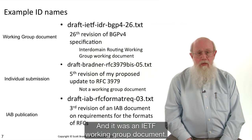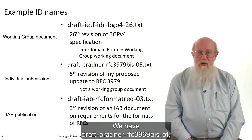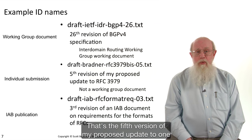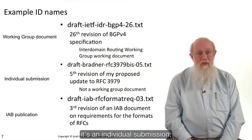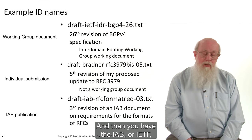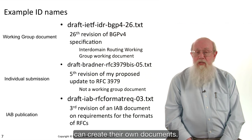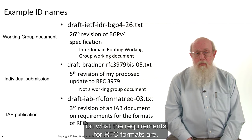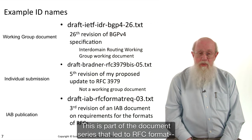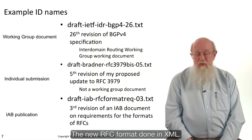I have 'draft-bradner-rfc3979bis-05' — that's the fifth version of my proposed update to one of the IPR documents in the IETF, RFC 3979. Not a working group document; it was under my own name — an individual submission. The IAB or the IRTF can also create their own documents. 'draft-iab-rfc-format-requirements-03' was a version of the IAB's document on what the requirements for RFC formats are, part of the document series that led to the new XML-based RFC format.